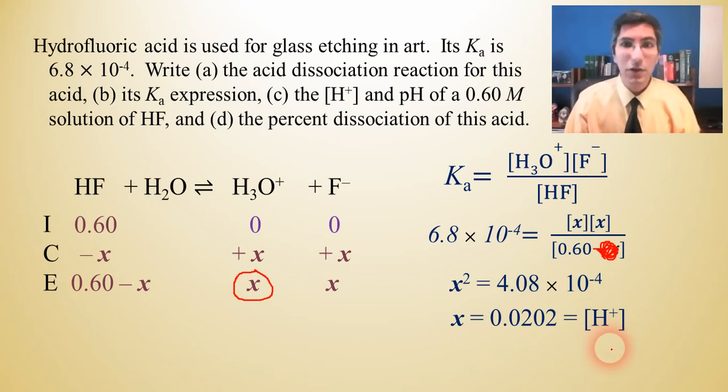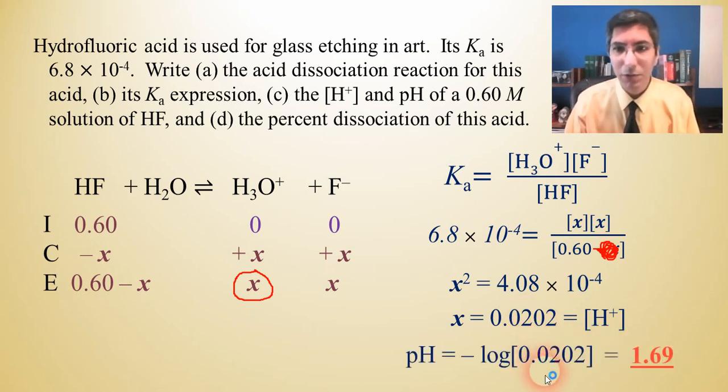Well, the pH is just negative log of H+, isn't it? So we just take the negative log base 10 of that number, and that's equal to 1.69. So that makes sense. This is fairly acidic, so we would expect the pH to be very low, way less than seven. So those are the answers to part C.